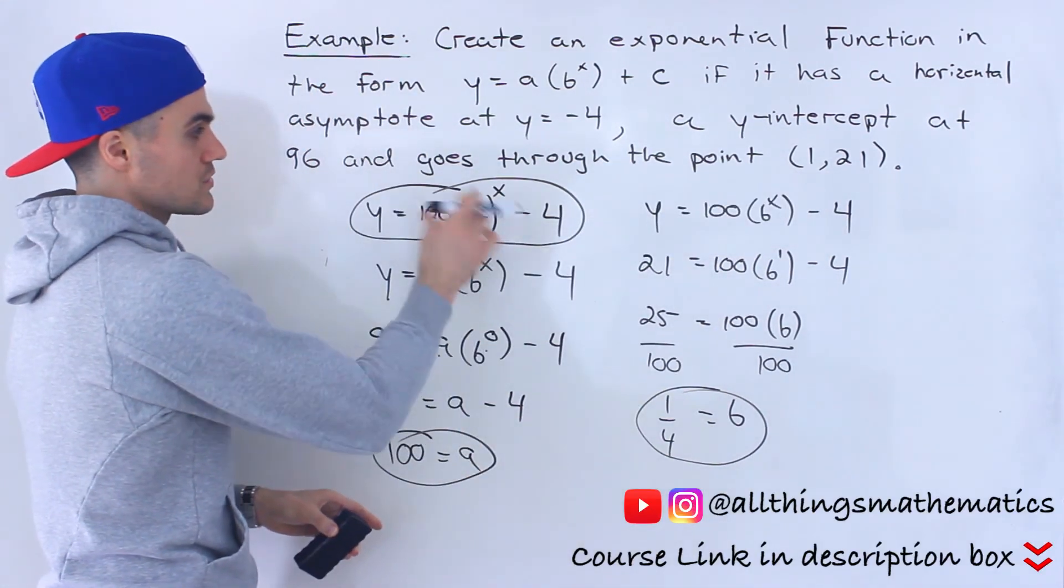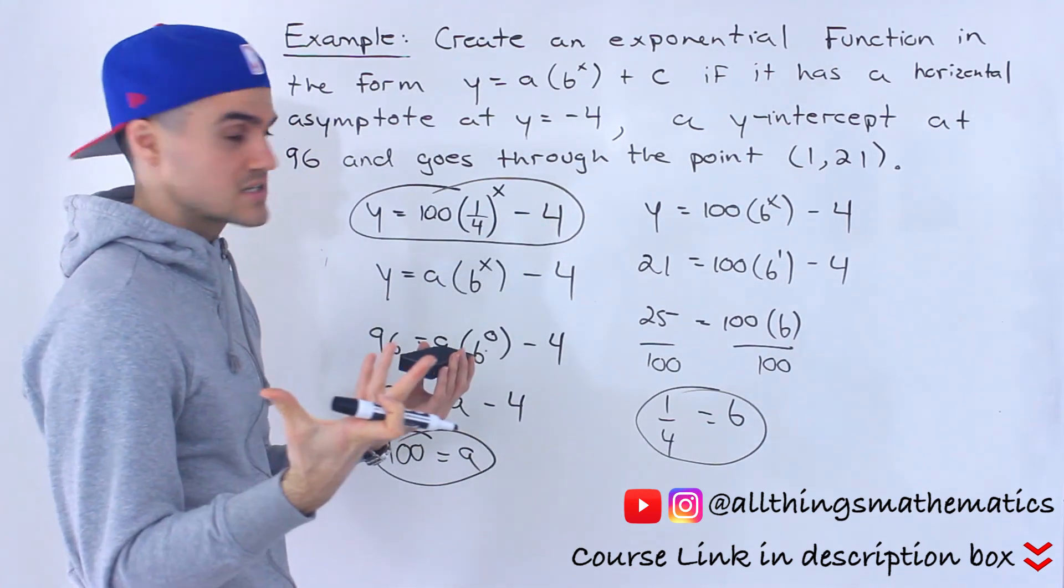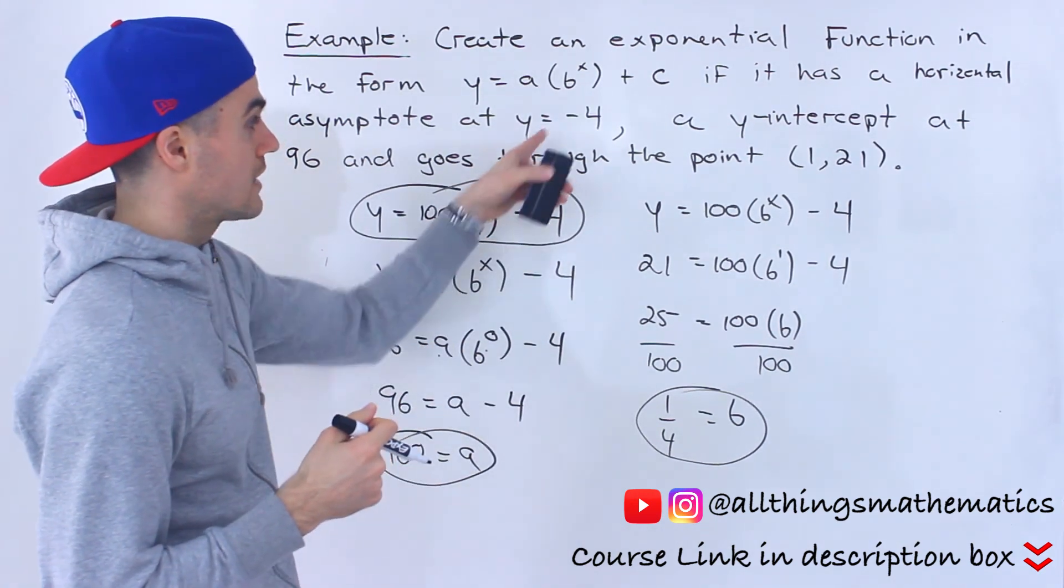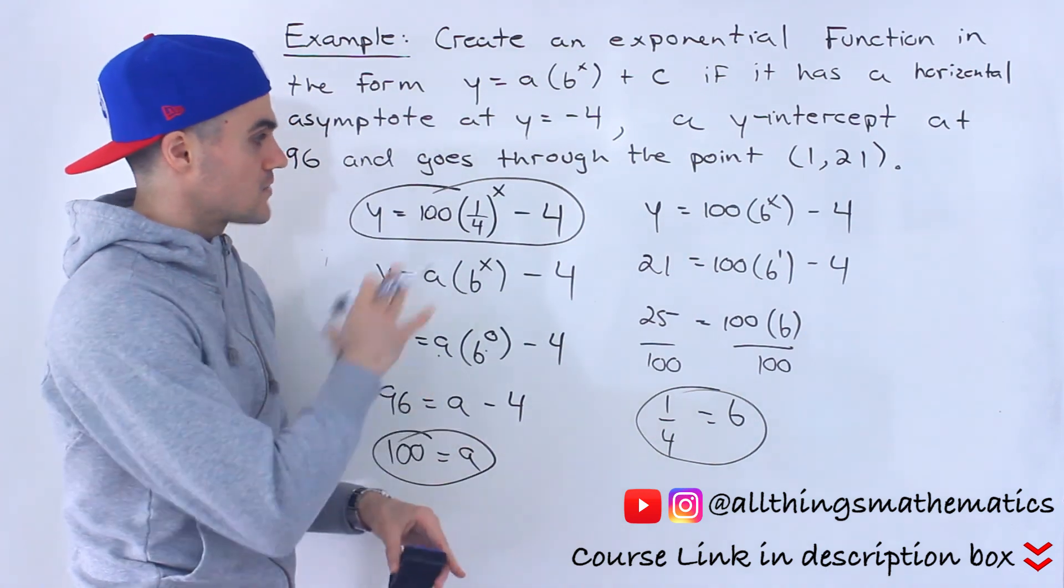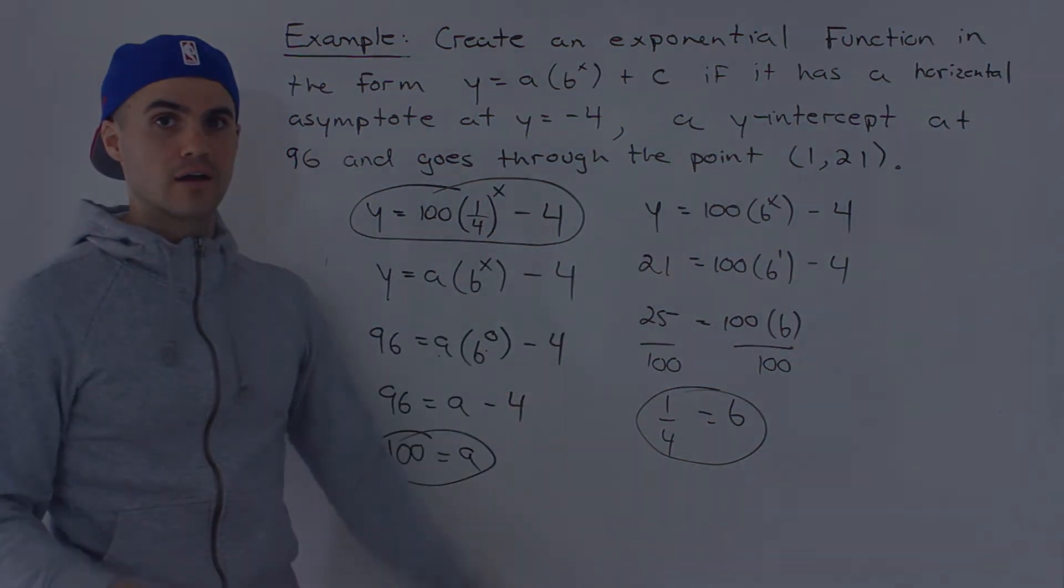And then from here, we can also tell that the horizontal asymptote, which is the c value for an exponential function, is negative 4. So everything checks out, and that's the final function.